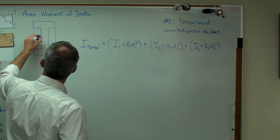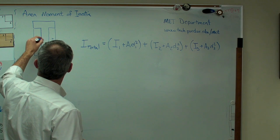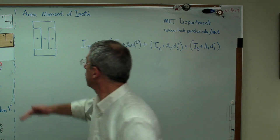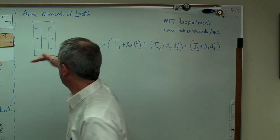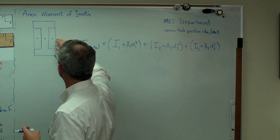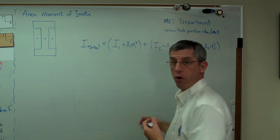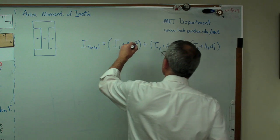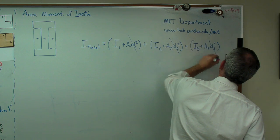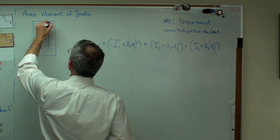The centroid of those individual boxes matches up with the centroid of the final shape. Since we're measuring the centroid about this axis here, about the x axis, since those are all the same, have the same altitude, D is zero for all three. So that goes to zero, that goes to zero, and that goes to zero.